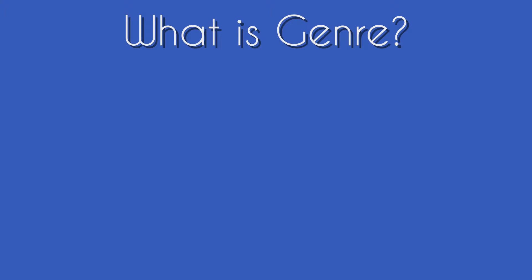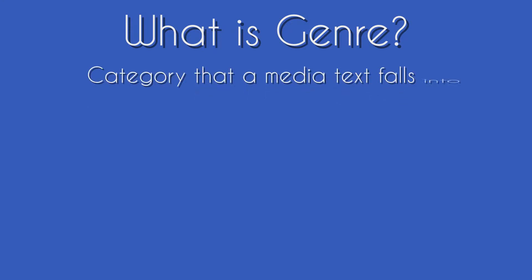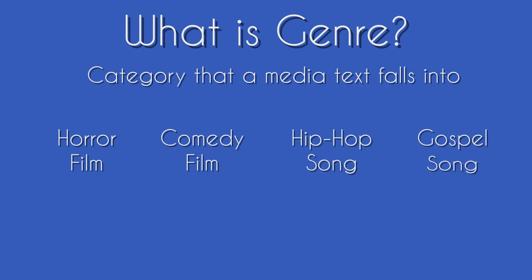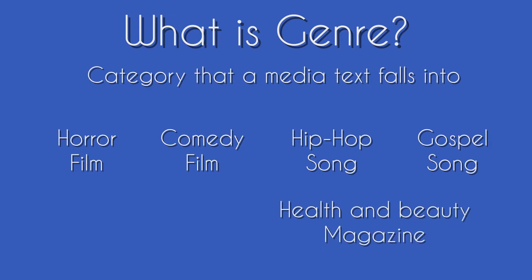Let's start off by establishing what genre actually means. A genre is essentially a category that a media text falls into. For example you can have a horror film, a comedy film, a hip-hop song, a gospel song, a health and beauty magazine, a sports magazine, and so on. Different media products have different categories or genres which they can fall into.